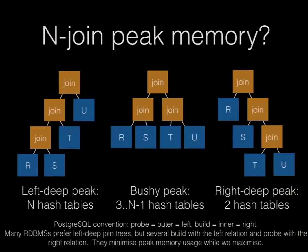Even if Postgres did generate right-deep joins, we still don't free the hash table as soon as we could, so you still wouldn't get the benefit. But if you did both — right-deep plans and early hash table freeing — you could have only two hash tables in memory at once, which might enable plans that would otherwise be impossible. Jim adds that the choice between left-deep and right-deep plans also has an impact on whether you can push bloom filters down to scans, which is a very interesting connection between these two topics.